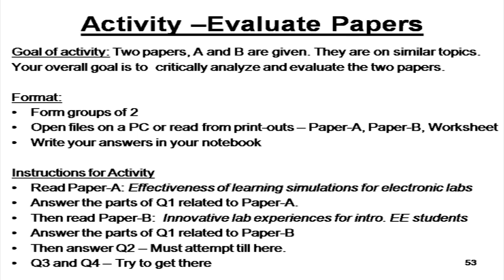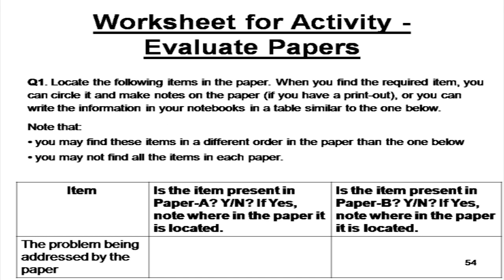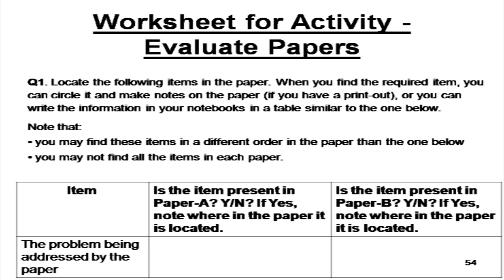The reason you have to read it carefully is that question 1 says to locate the following items in the paper. When you find the required item, circle it and make notes on the paper itself if you have printouts, or if you are doing it on a PC, you can locate it on the PDF file on the screen and write in your notebooks: which section, which page number, which paragraph did you find this item. Some of the items are not easily found — you really have to read it line by line and paragraph by paragraph in order to locate them.